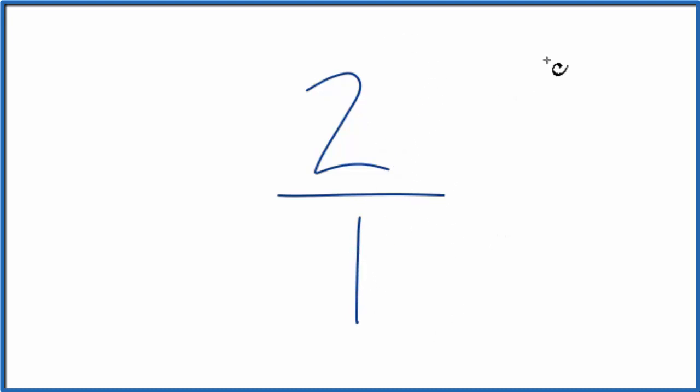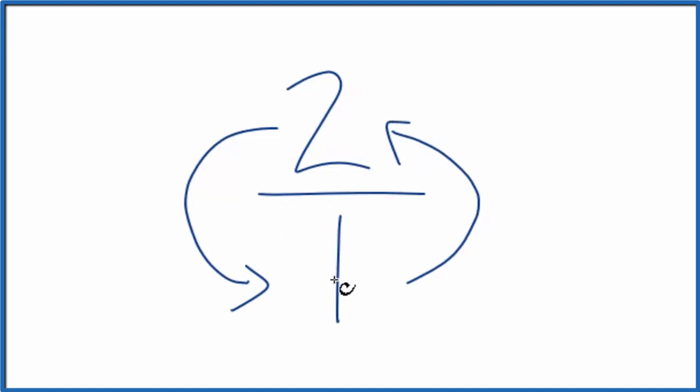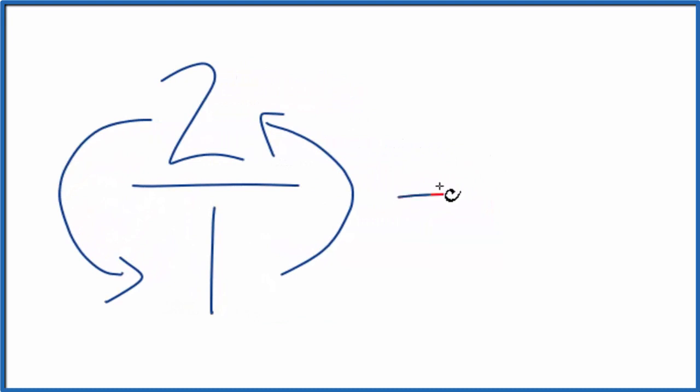But now, when we're trying to find the reciprocal for a number, we flip this numerator and denominator. We move the numerator down to the bottom and the denominator to the top. So instead of 2 over 1, the reciprocal for 2, that is 1 on top, 2 on the bottom.